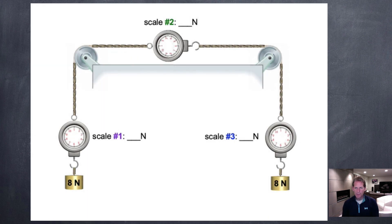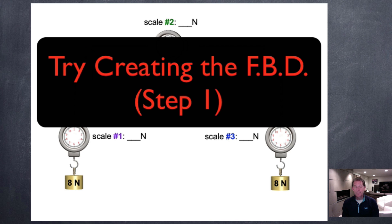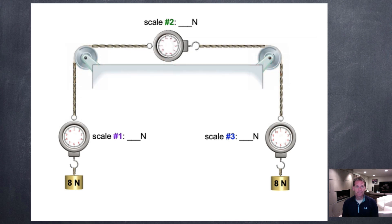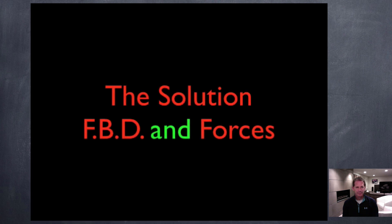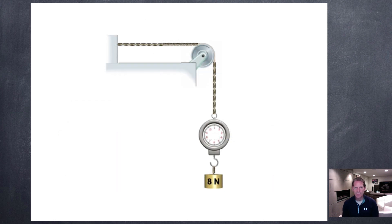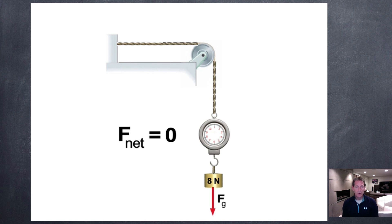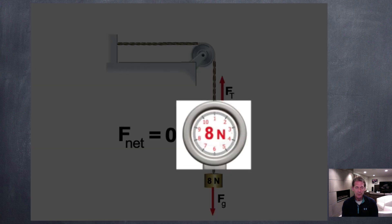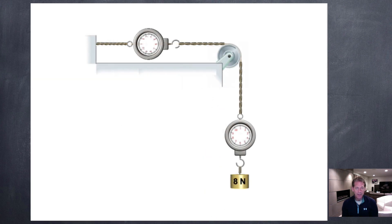Example two: we have two eight-newton masses suspended by a rope connected over two pulleys. The scales have insignificant mass, so ignore them. This is a tough one — many students get stumped. Let's focus on just one object at a time. Looking at the scale on the right: the eight-newton mass is hanging, not moving, so the net force is zero. There's a force of gravity pulling down, so there must be a force of tension pulling up of the same size. Therefore the force of tension in the rope is eight newtons, and the scale reads eight newtons.